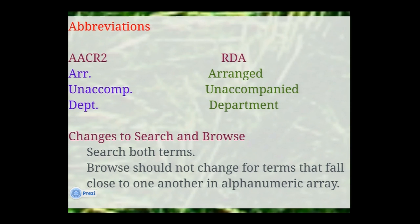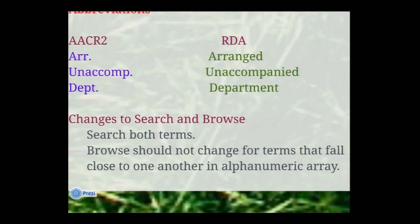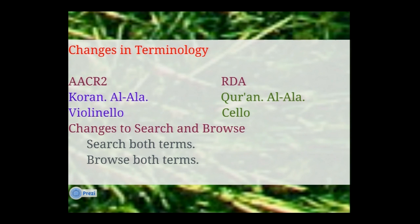Browse shouldn't necessarily change too much because these terms appear so close in alphanumeric order that they should appear near each other. There are also terminology changes in subject headings. One big change: the Quran now has a standard spelling where it didn't before — the spelling on the right is now correct in RDA. Also, 'violoncello' — a word nobody uses — is now being called 'cello' in music. For 'violoncello,' use a truncated search; for the Quran, use both terms.